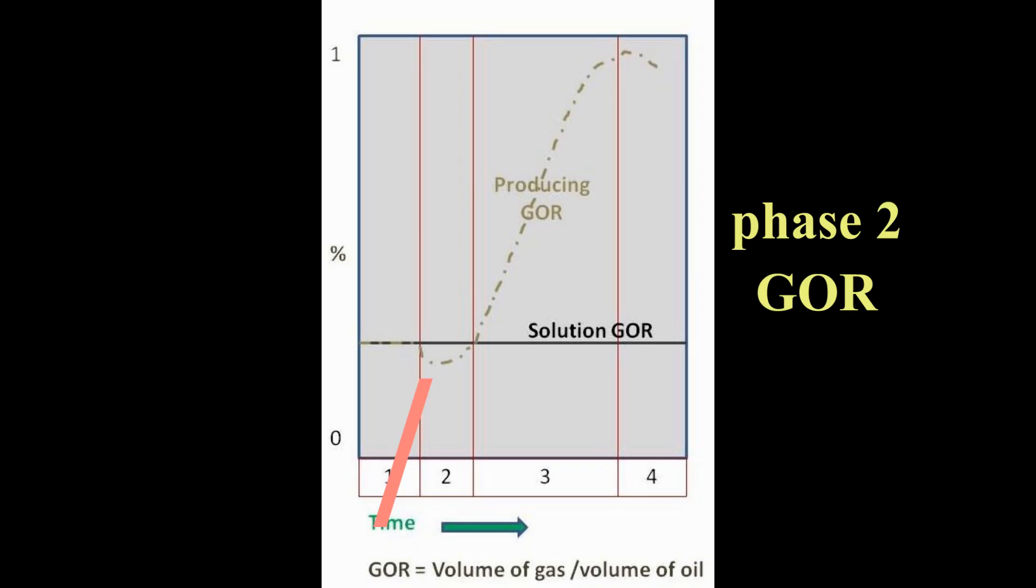Phase two is when the solution GOR falls below the initial GOR for a period of time. This is because some of the fluid in the solution gas is released into the reservoir as gas forming a gas cap. This trapped gas is prevented from being produced along with the rest of the solution gas as it is pushed to the surface. The gas remaining in the solution gas is the only gas produced, thereby causing this dip. At the point where the reservoir GOR stops falling and once again climbs above the original GOR is when phase two ends.